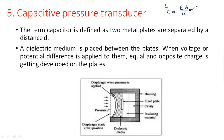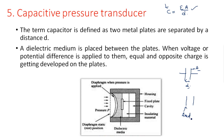If the distance d varies, capacitance varies; if area A varies, capacitance also varies. These changes affect the value of capacitance, while ε remains constant. One plate is a fixed plate and the other is a mobile or variable plate.